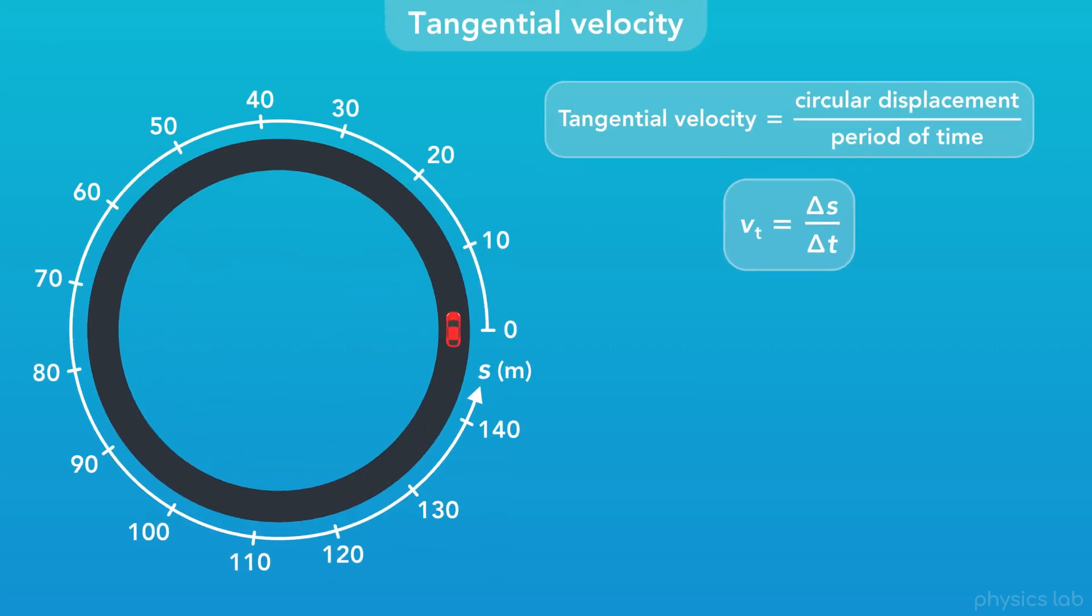Like linear velocity, tangential velocity is the circular displacement of an object divided by a period of time. We still use the variable v for velocity, and we use the subscript t to mean tangential, which we'll explain soon. The SI unit for tangential velocity is meters per second, the same as linear velocity.